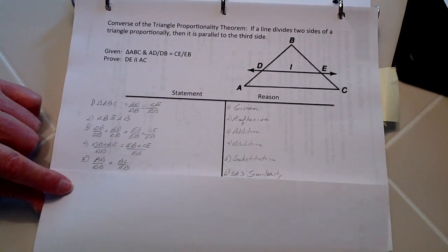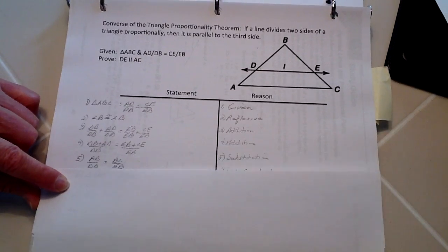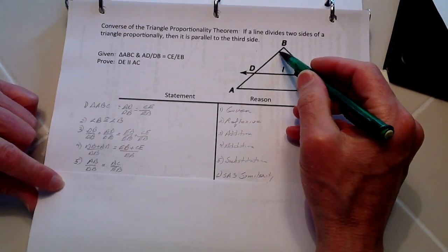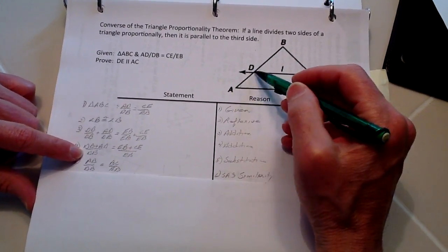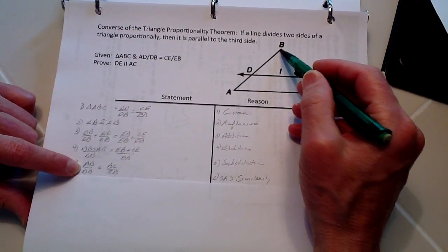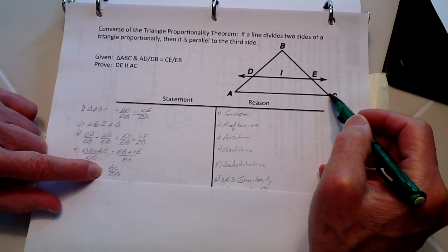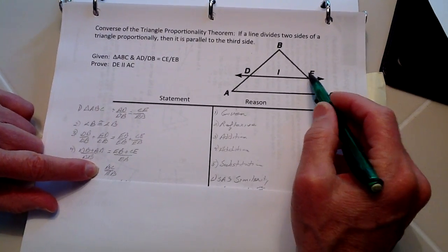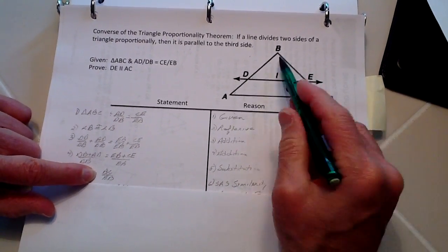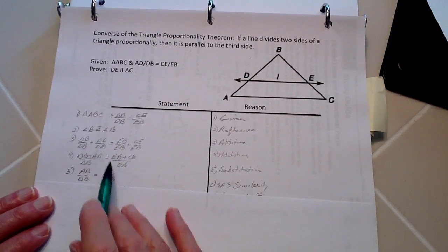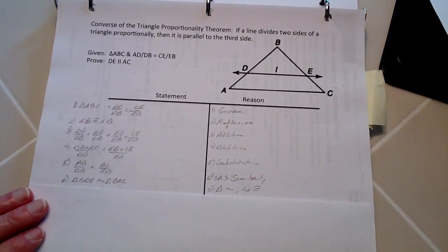And now from substitution, you can see that BD plus AD is going to equal to AB. Likewise, CE and EB added together is going to equal to BC. So that's, again, we just use substitution.